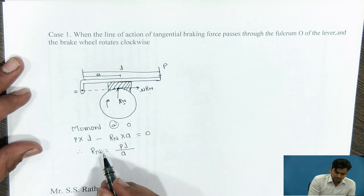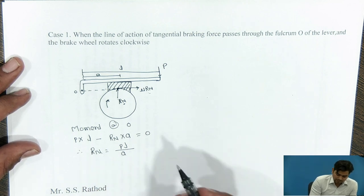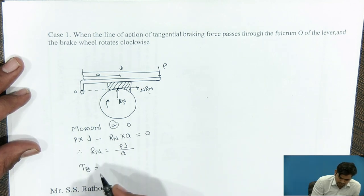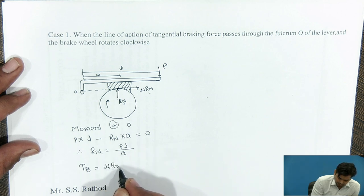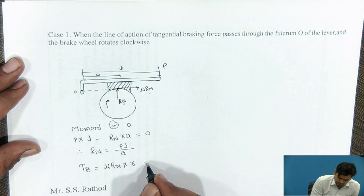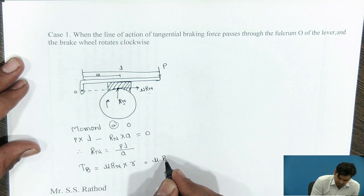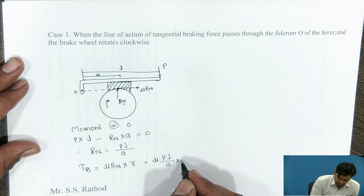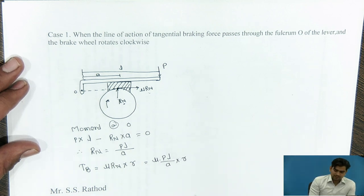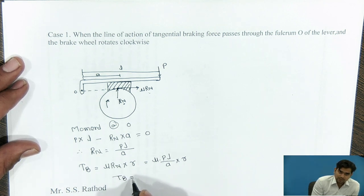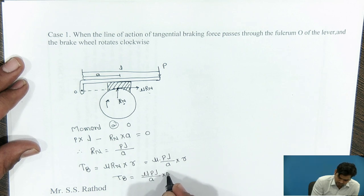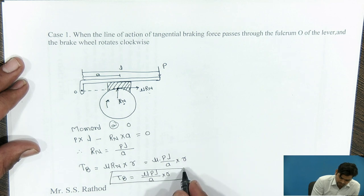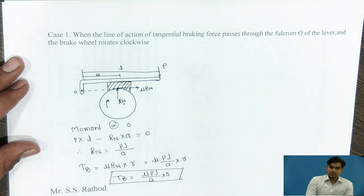This is the value of normal reaction Rn. We know that braking torque Tb is equal to μRn into the radius of the drum R, which equals μ into PL upon A into radius R. So we can easily find out the value of braking torque Tb as: Tb = μPLR / A.